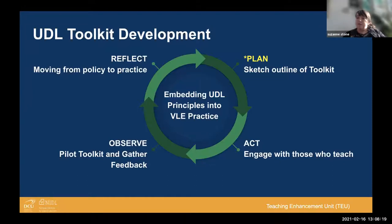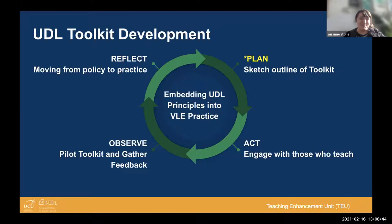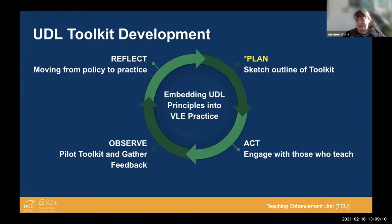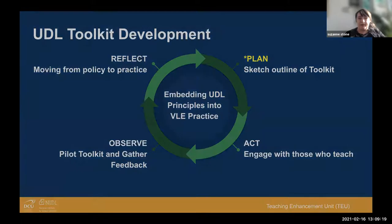We took a sketch outline of the toolkit to two focus groups, got feedback on the structure, revised the toolkit, and then our next stage was to work with staff. Lorraine and Anne-Marie worked with us back in September 2019 to pilot the toolkit in a scaffolded session where myself and Karen offered additional support and discussion time, while Lorraine, Anne-Marie, and their colleague Ellen did all the work — redesigning their Loop, which is Moodle at DCU, pages.